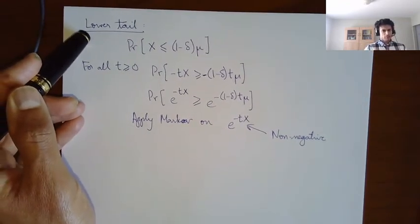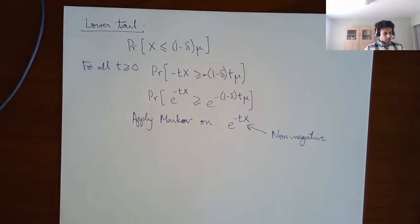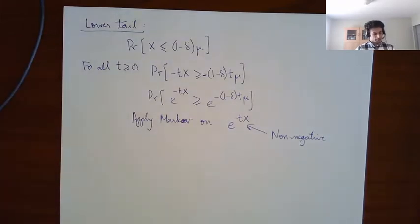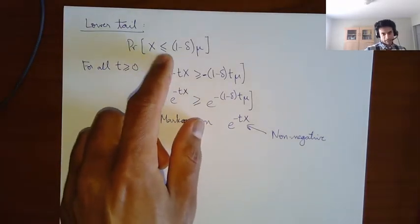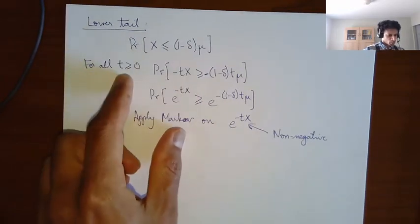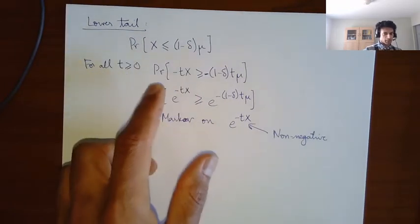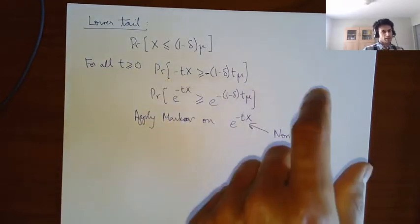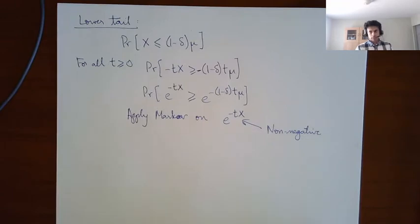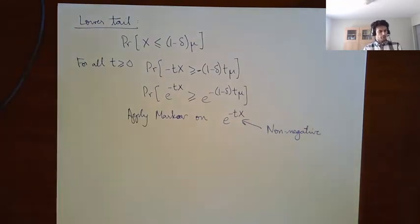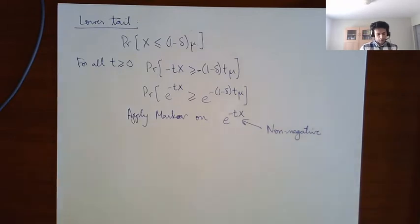For the lower tail, you use the moment generating function at negative values. The probability that x is less than 1 minus delta times mu: for all t greater than 0, this is the probability that minus tx is greater than minus (1 minus delta) t mu. Then you exponentiate and do essentially the same argument as before. The calculus is different, but the idea of the analysis is exactly the same.